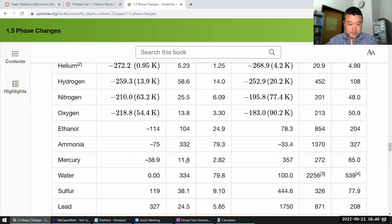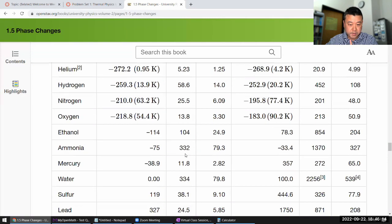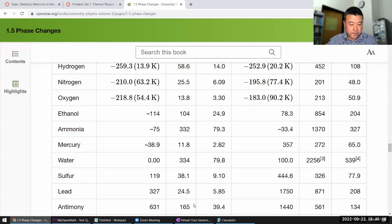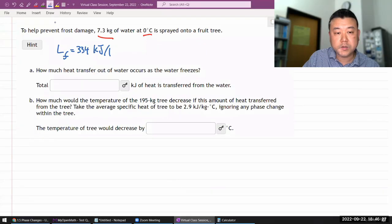Let me go down to water. Latent heat of fusion, kilojoules per kilogram. 334 kilojoules per kilogram.